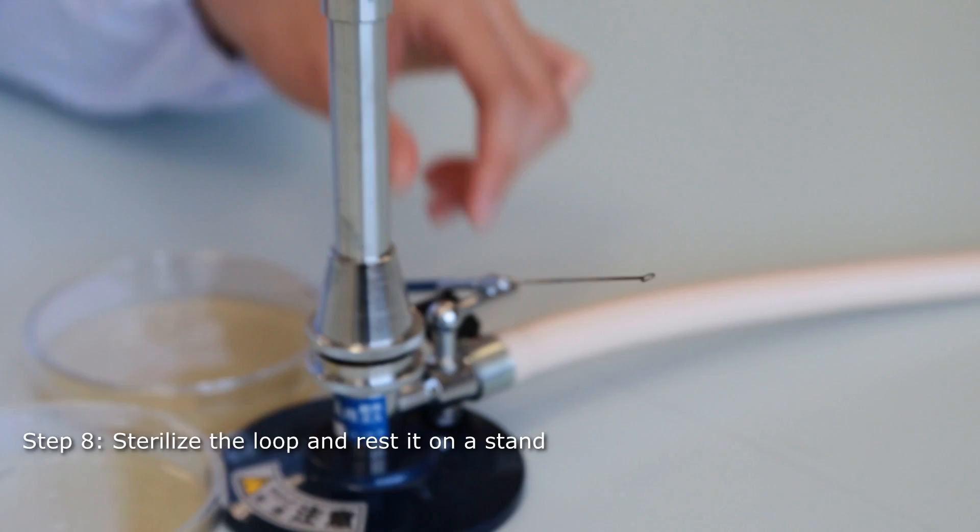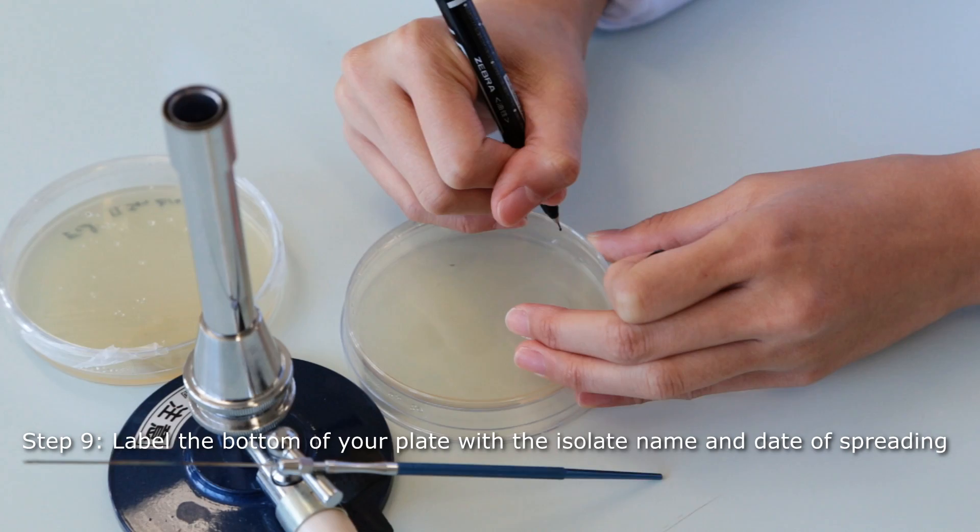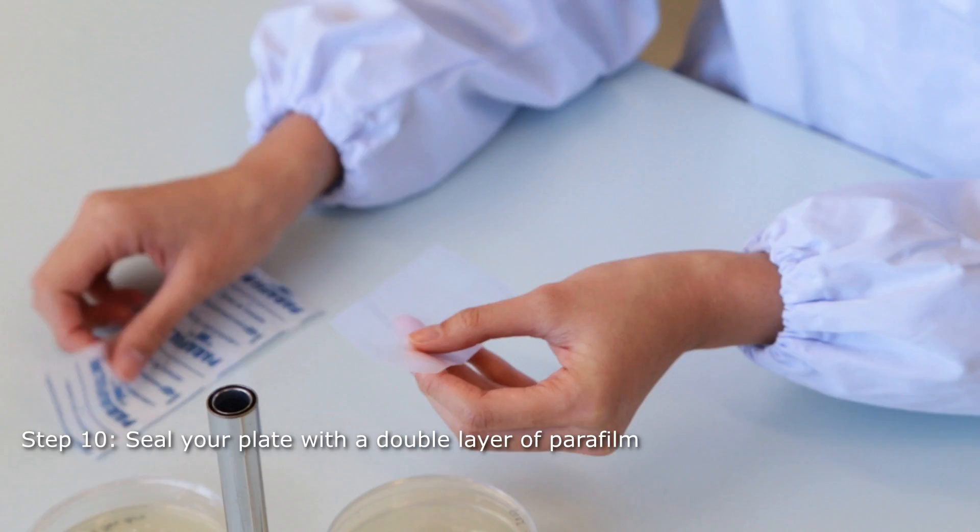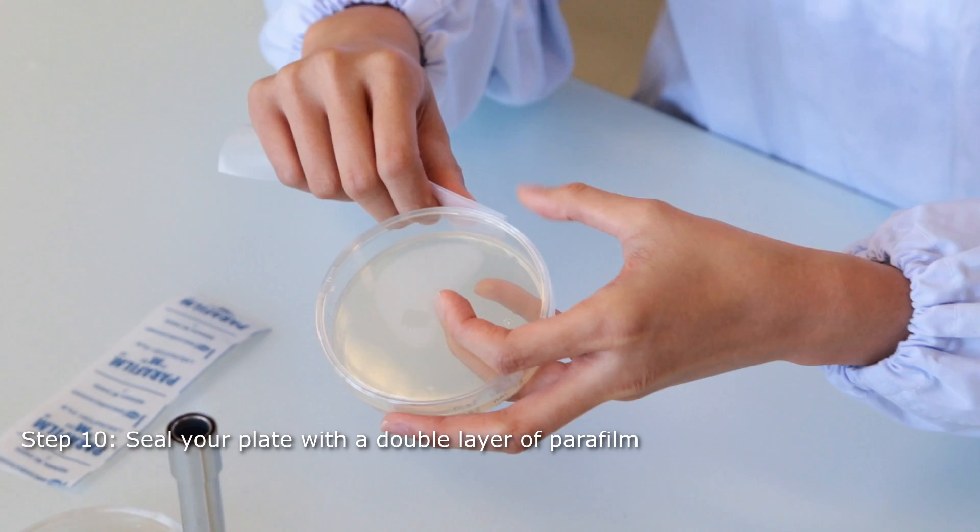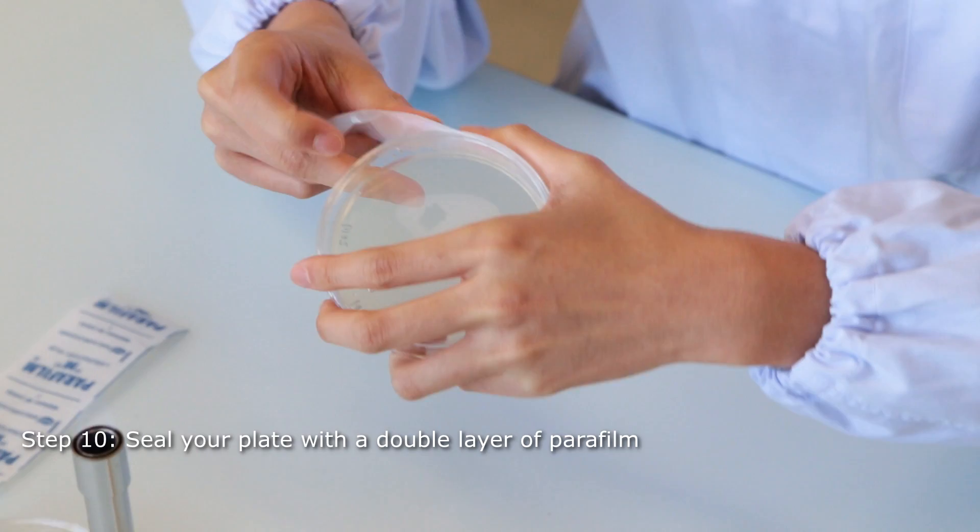Label the back of your plate using a permanent marker. Use parafilm to seal the petri dish in order to avoid excessive evaporation during incubation. Parafilm also lets gas through, which allows aerobic respiration throughout the incubation period.